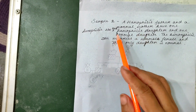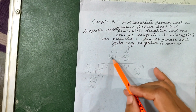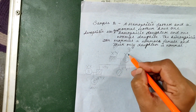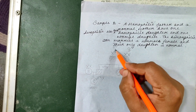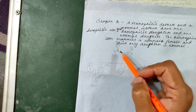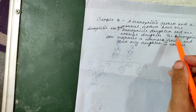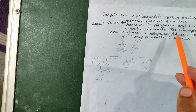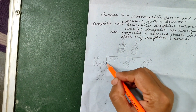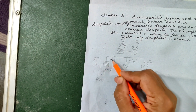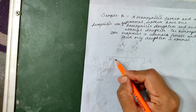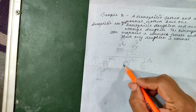So the hemophilic male has genotype X^h Y and the carrier female is X^H X^h. The hemophilic son is X^h Y and the hemophilic daughter is X^h X^h, while the normal daughter is X^H X^h. These are the genotypes for the hemophilia pedigree in the problem we are solving.